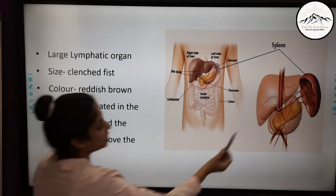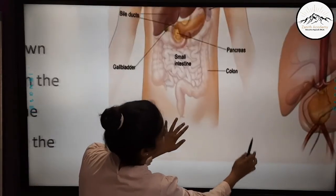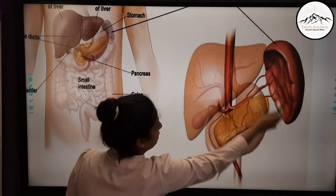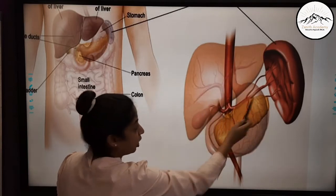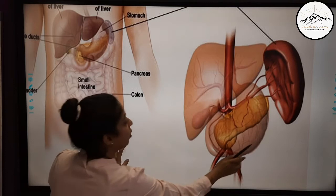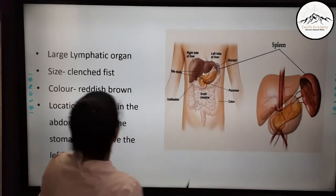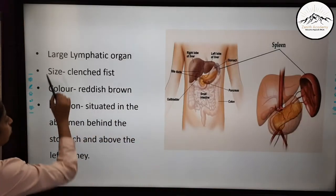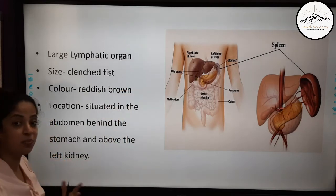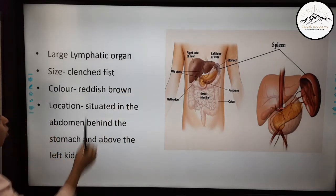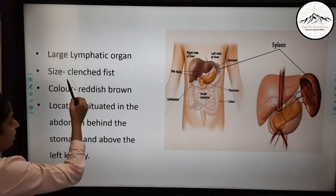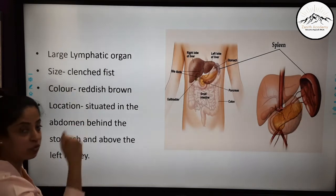You can see the diagram of the spleen here. Check out its location because this is very frequently asked in your board exams — the location of spleen. Spleen is a large lymphatic organ.